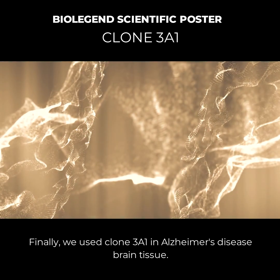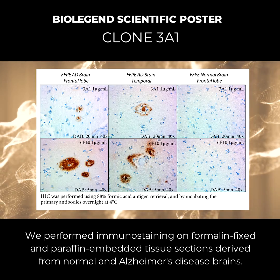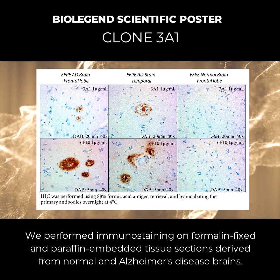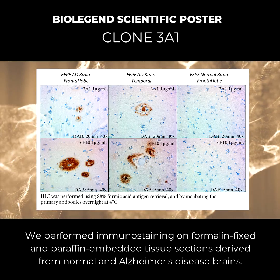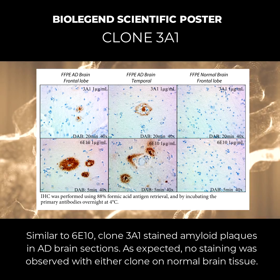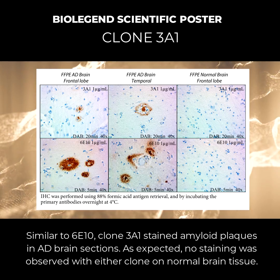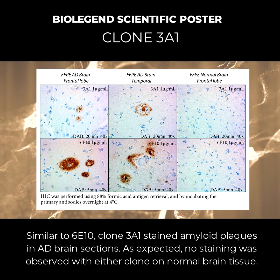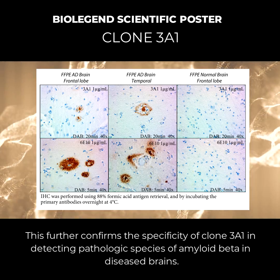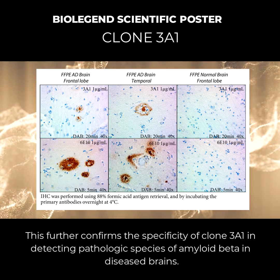Finally, we used clone 3A1 in Alzheimer's disease brain tissue. We performed immunostaining on formalin-fixed and paraffin-embedded tissue sections derived from normal and Alzheimer's disease brains. Similar to 6E10, clone 3A1 stained amyloid plaques in AD brain sections. As expected, no staining was observed with either clone on normal brain tissue. This further confirms the specificity of clone 3A1 in detecting pathologic species of amyloid beta in diseased brains.